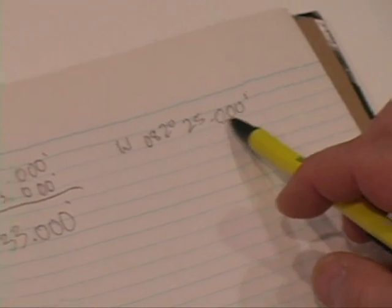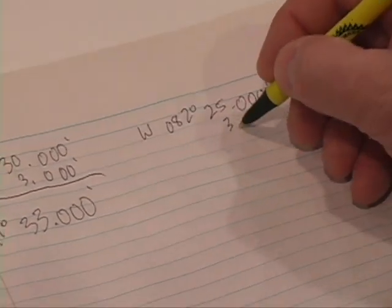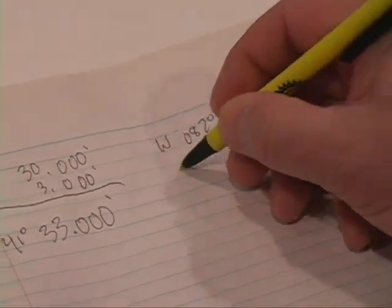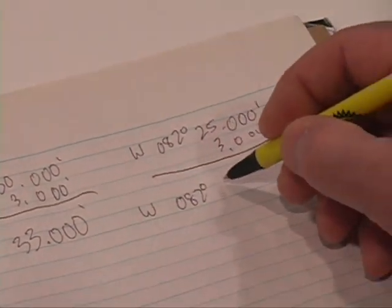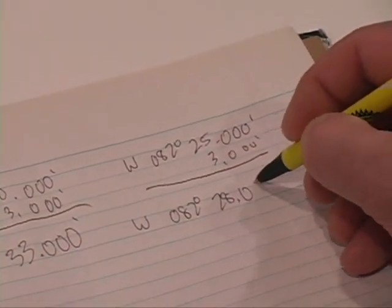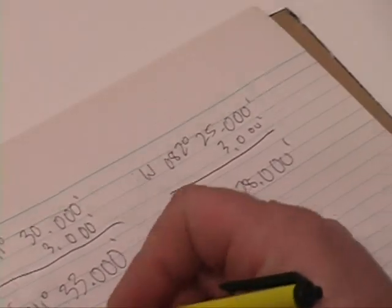So now what I do is I take my known point, 82 degrees 25.000, I add that 3.000 minutes. And now my longitude is 82 degrees 28.000 minutes.